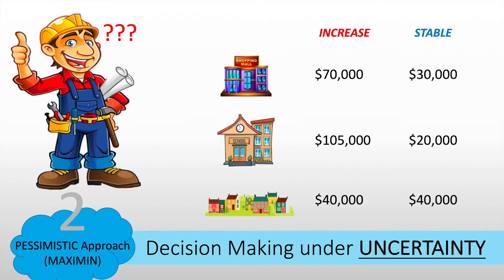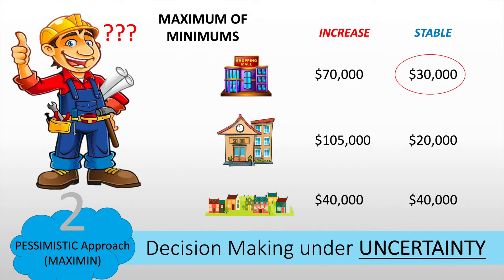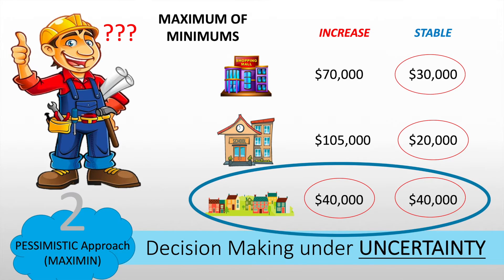Now the pessimistic approach, also called maximin — maximum of the minimums. First, choose the minimum for each alternative: $30,000 for shopping mall, $20,000 for school, and $40,000 for houses. Then choose the maximum of these minimums, which is $40,000 — the houses. Thus, in the pessimistic approach, Bob the Builder should build the houses.